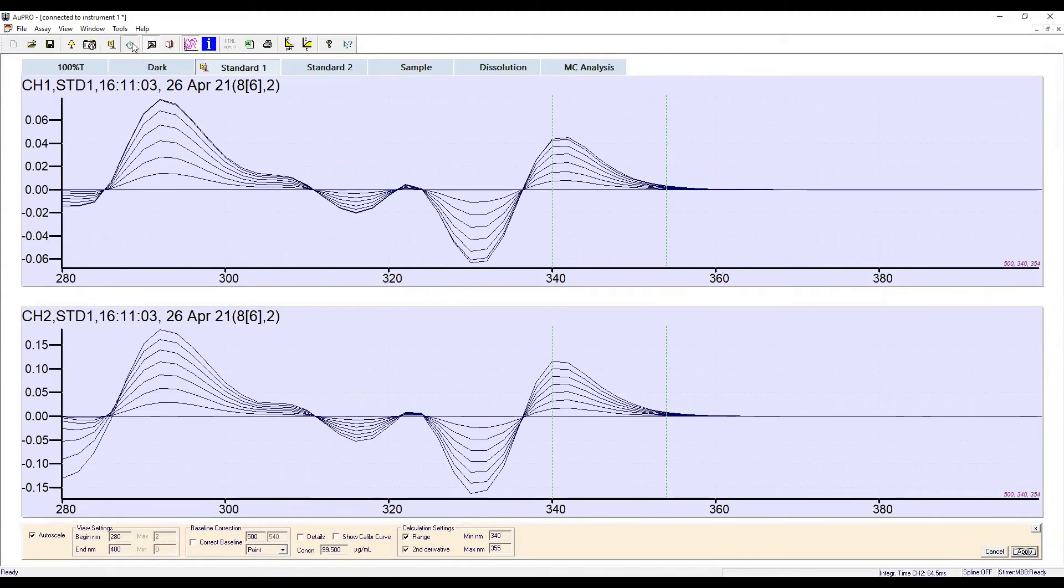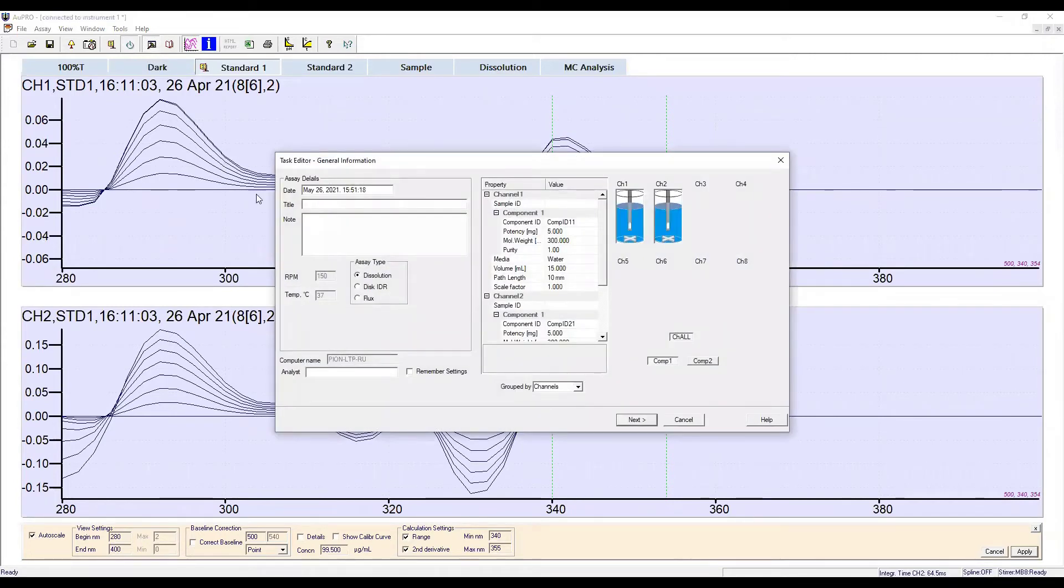The run stop button is pressed to bring up the task editor. From this window, we can enter details into our sample model. The assay is given a title, and the flux assay type is selected.